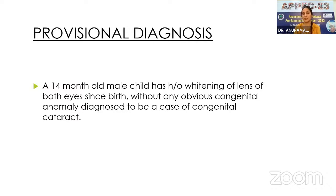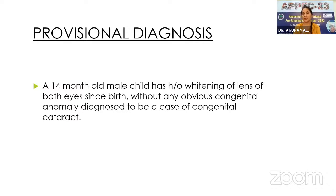Once the patient loses consciousness, an IV cannula is secured. Injection fentanyl 1 mcg/kg (10 mcg) is given 2–3 minutes prior to intubation. Injection lignocaine preservative-free 1.5 mg/kg (15 mg) is given 90 seconds prior to intubation. Injection propofol 1 mg/kg (10 mg) is given before intubation. Bag-mask ventilation is confirmed, then vecuronium 0.1 mg/kg (1 mg) is given. Once relaxed, airway is secured with flexometallic cuffed endotracheal tube of appropriate size — 4 or 3.5 mm internal diameter — fixed opposite to the surgical site.